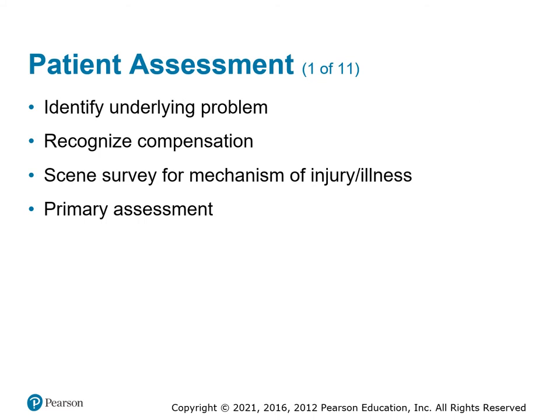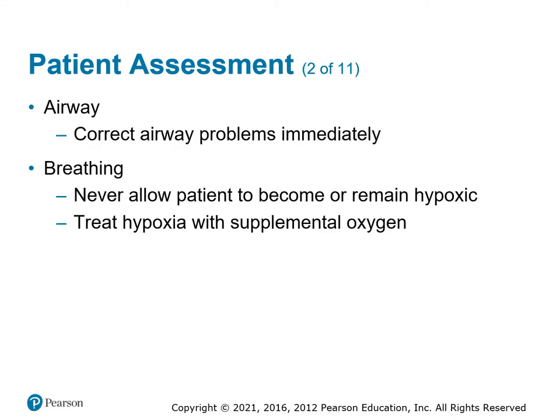For patient assessment, try to find the cause and the mechanism to guide treatment. Look for compensatory signs — if the heart rate is up and there's a mechanism, put the pieces together and treat for potential shock. Don't wait for decompensation. Do a good scene survey for nature of illness or mechanism of injury, maintain ABCs, and get a good primary assessment. Fix airway problems immediately. If the mechanism suggests hypovolemia or hypoperfusion, start treating aggressively with oxygen — don't wait until they become hypoxic.